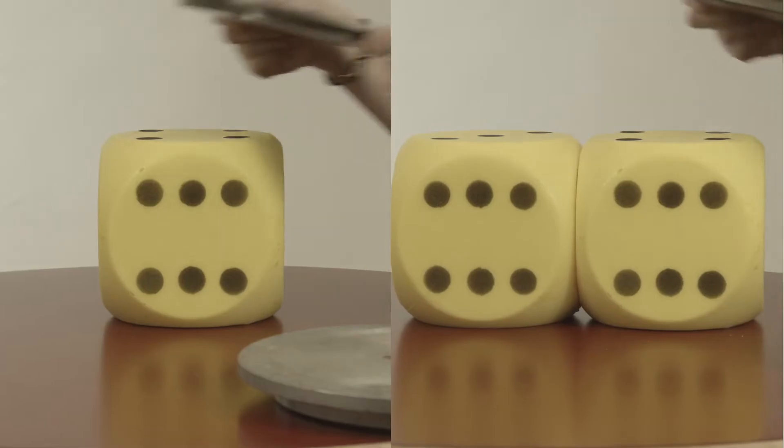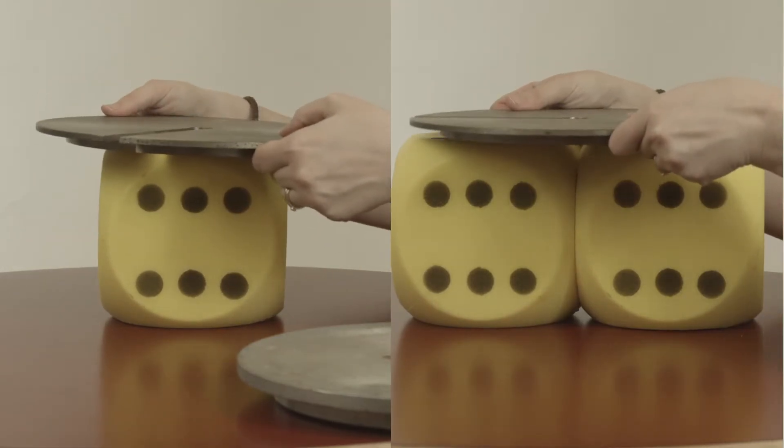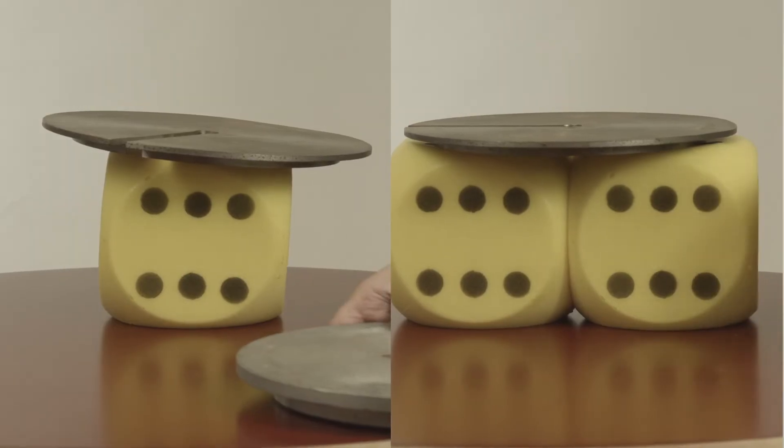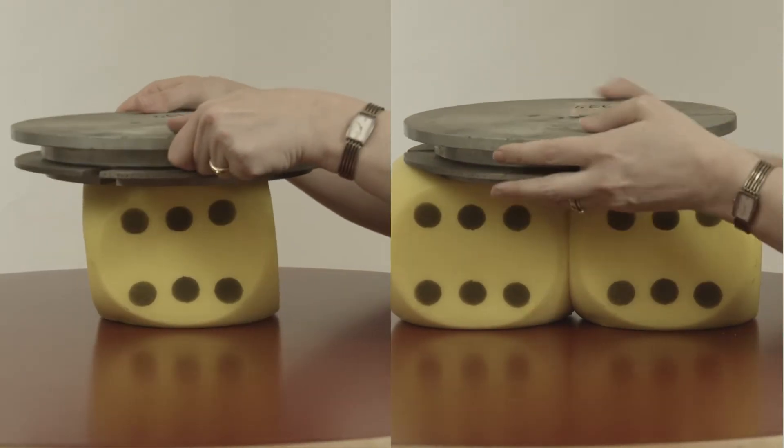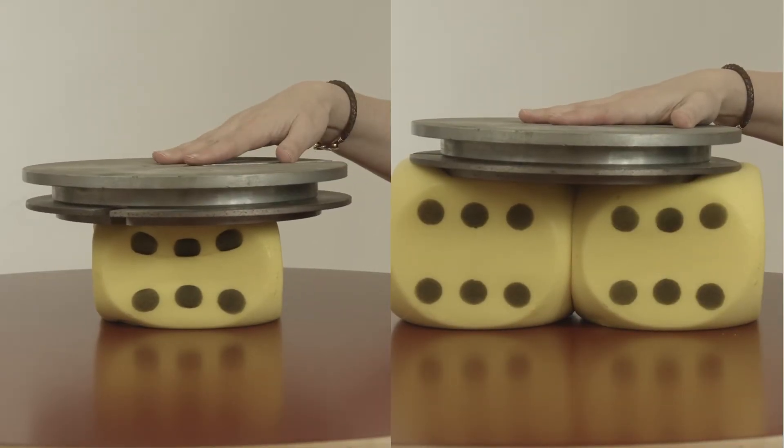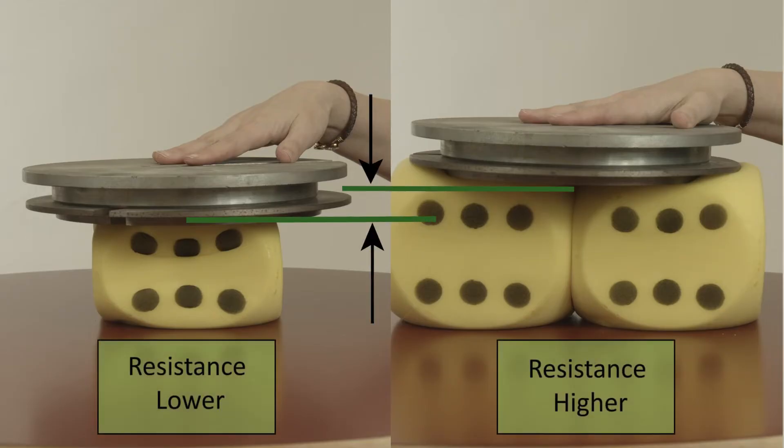Let us therefore have a look at these two foam dice. On the left we have one die, and on the right we have two. What would happen if we compress both with the same weight? As you can see that in the case of two dice, double the diameter of one die, the deformation is less than if the same weight is applied to the single die. Their combined resistance against deformation is higher.